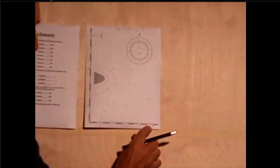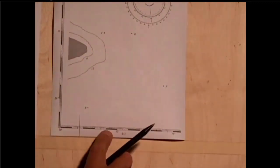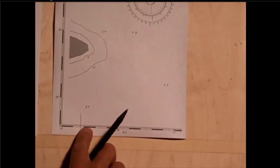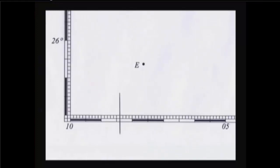and down here I have my longitude, 75, 1, 2, 3, 4, 5 minutes, 6, 7, 8. 75 degrees, 8.4.